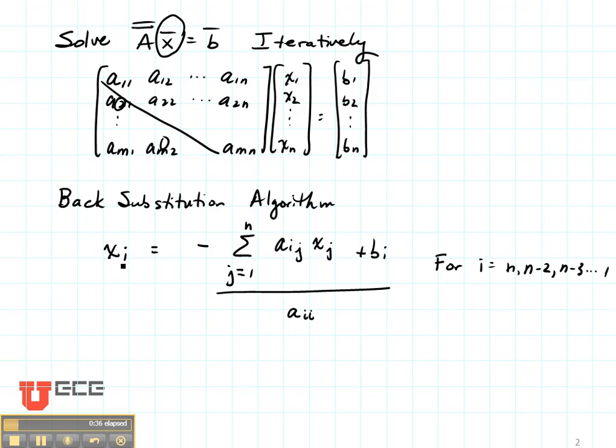We could have said that Xi, we would have begun with our last one, was minus the diagonal element times Xj plus bi divided by the diagonal element. We would have started at the bottom and worked up progressively.